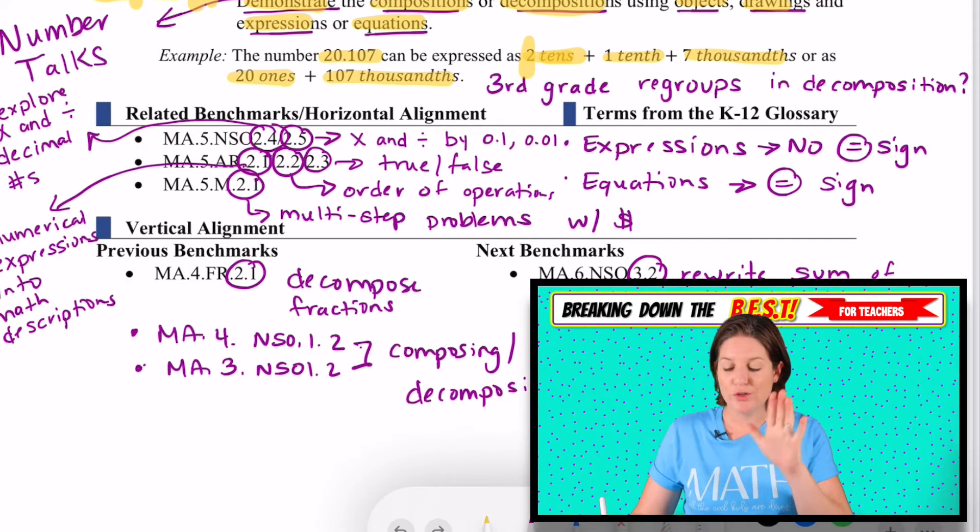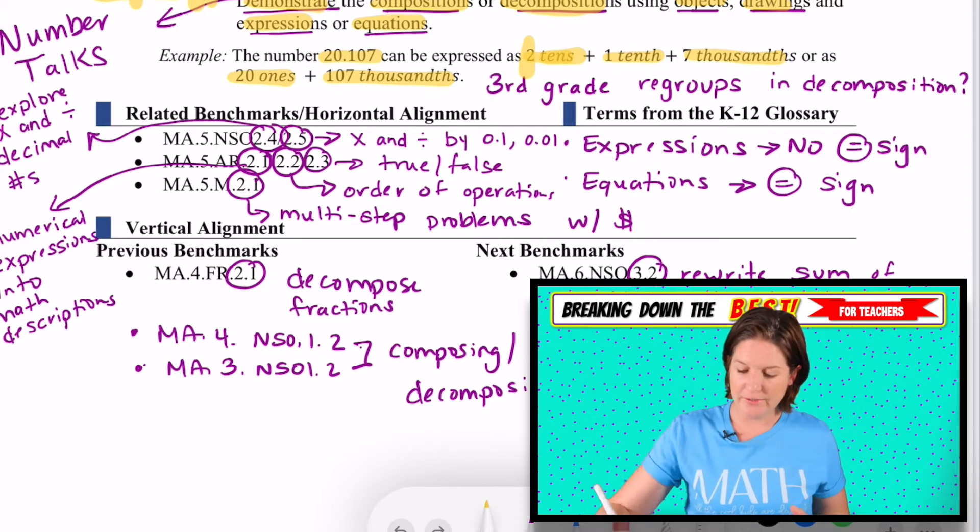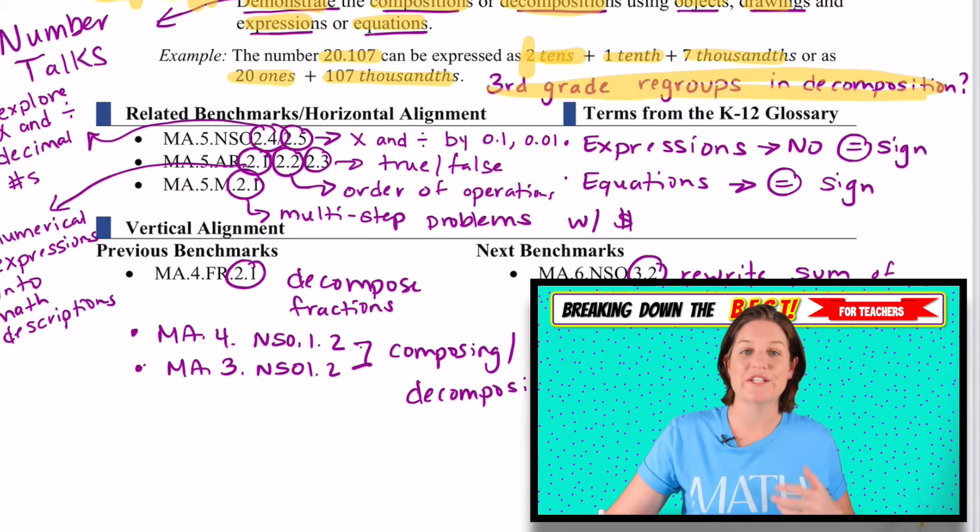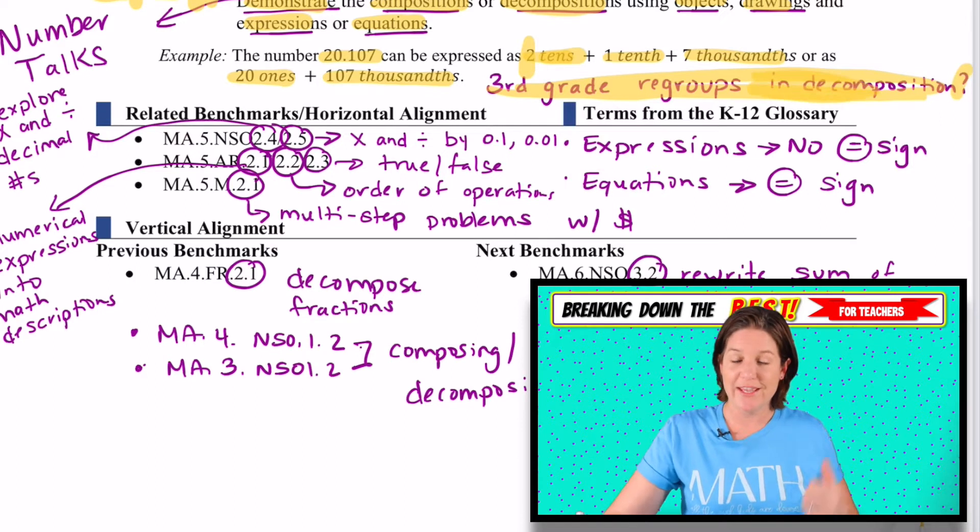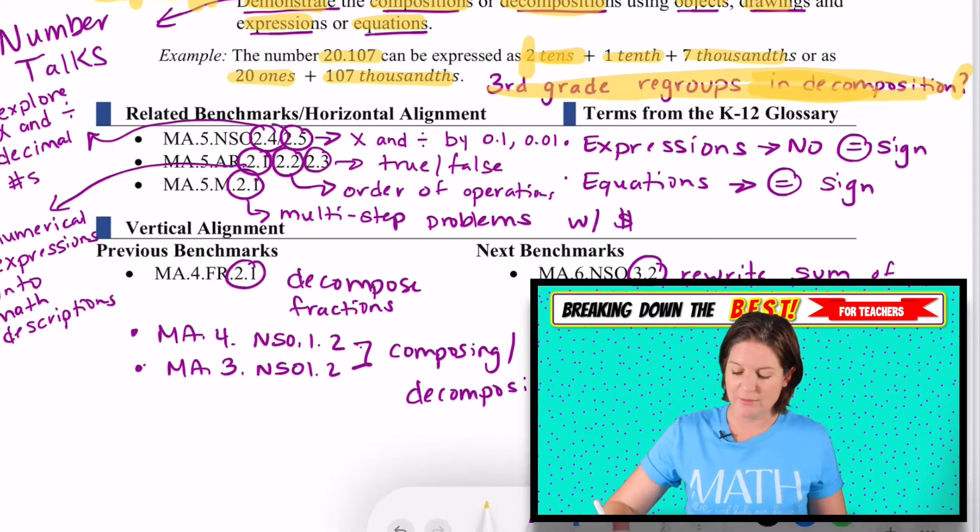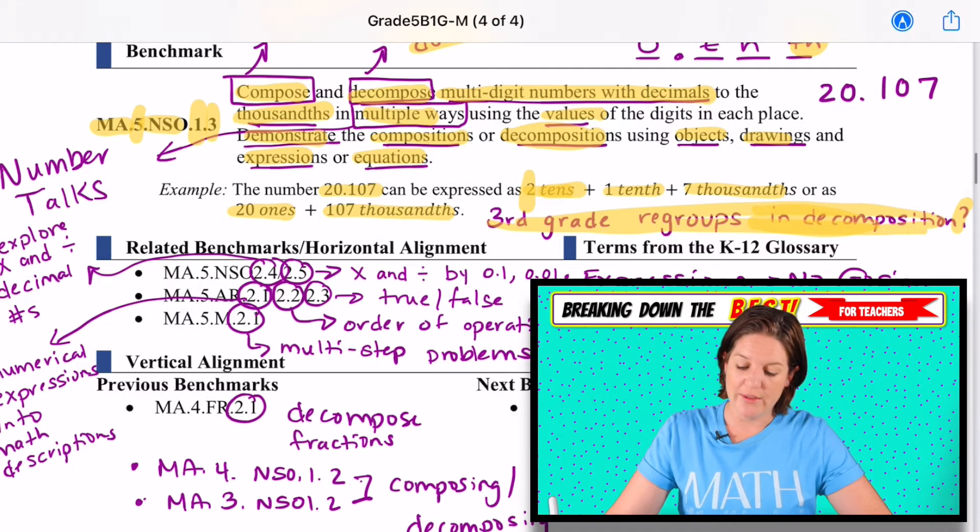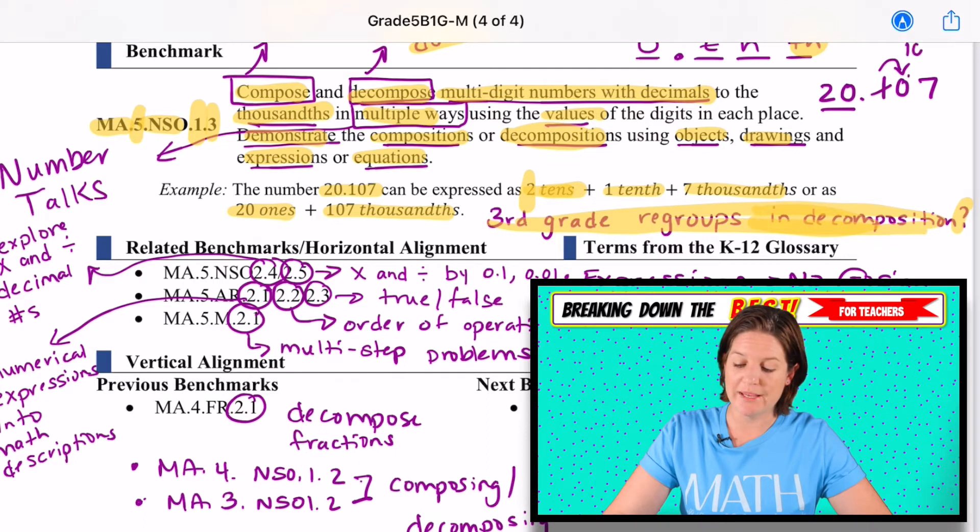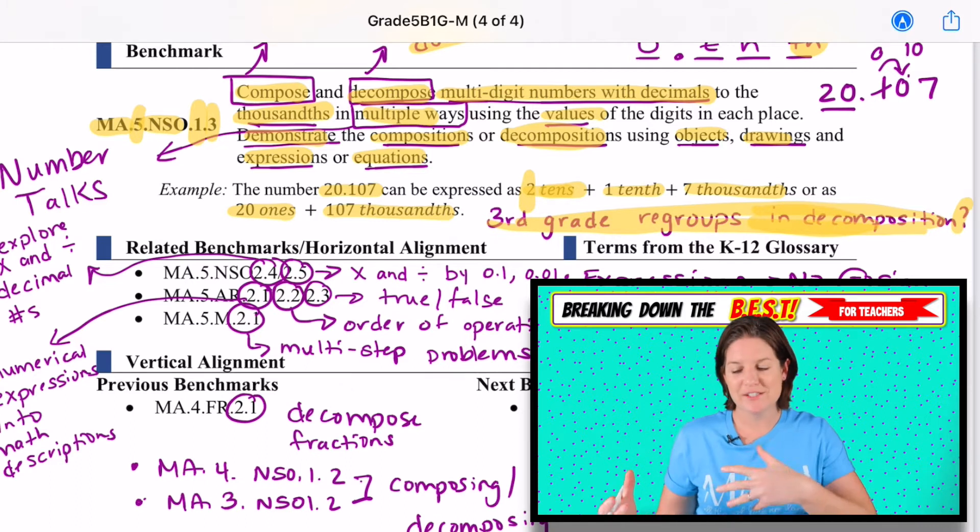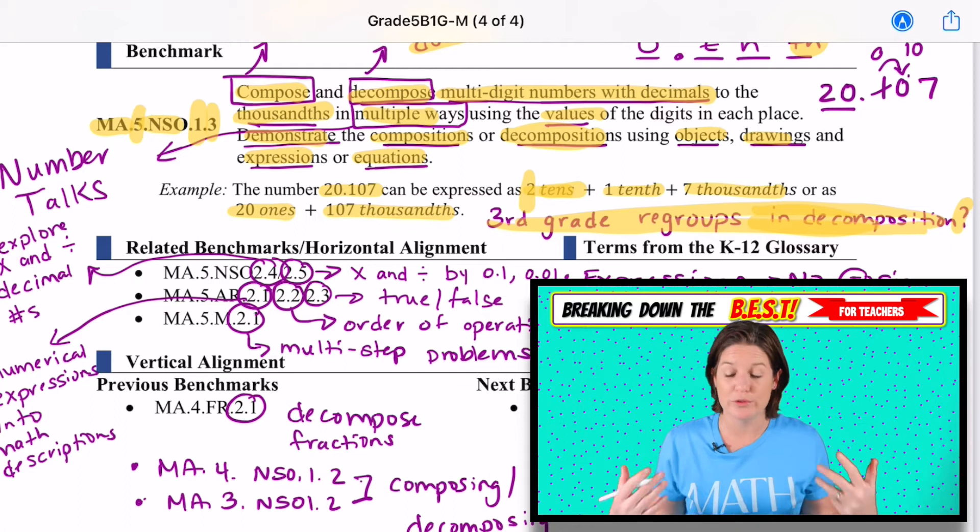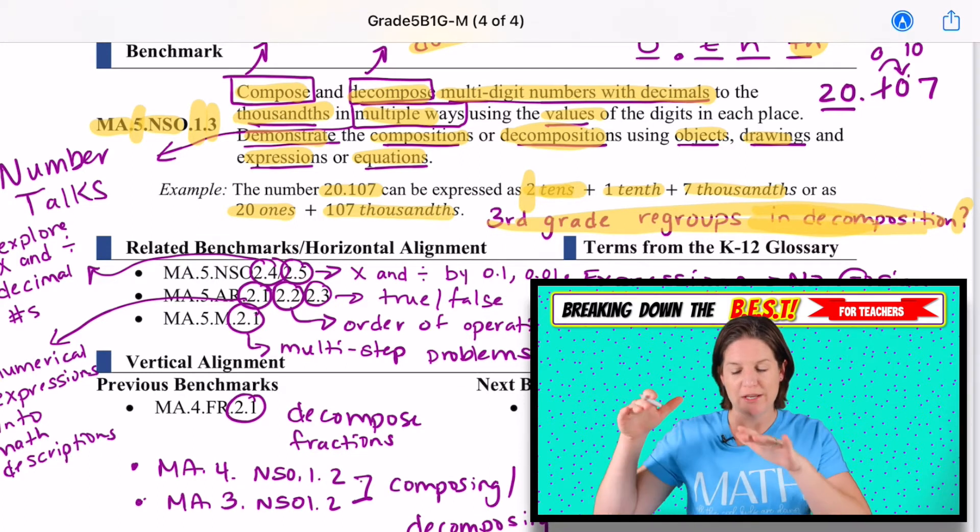So one of the things that I made note of and I constantly have in my brain is that in third grade, the third grade standard requires them to also regroup with decomposition. And I put a question mark there because in fourth grade and in fifth grade, I have not seen examples or evidence that you'll have to regroup as well. And you might be saying, Sarah, what do you even mean by this regrouping?